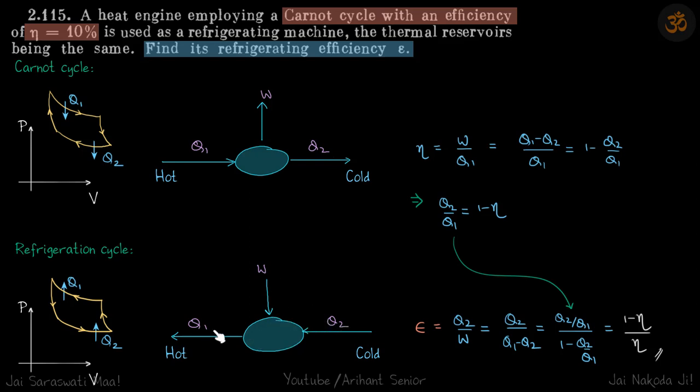So W is Q1 minus Q2. We divide by Q1 on both sides, so this becomes Q2 by Q1 upon 1 minus Q2 by Q1.